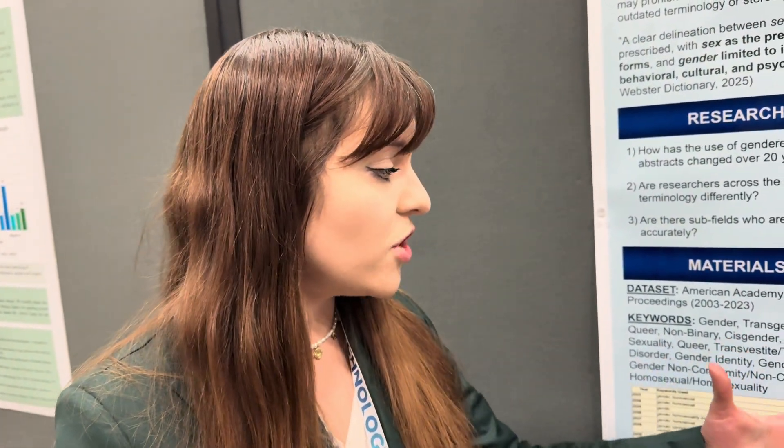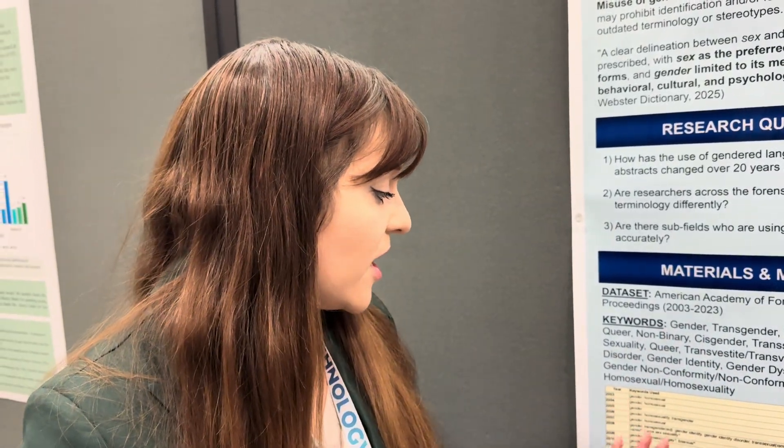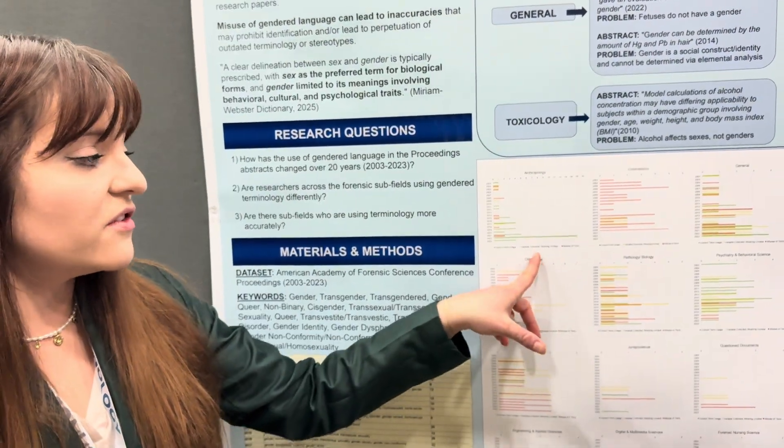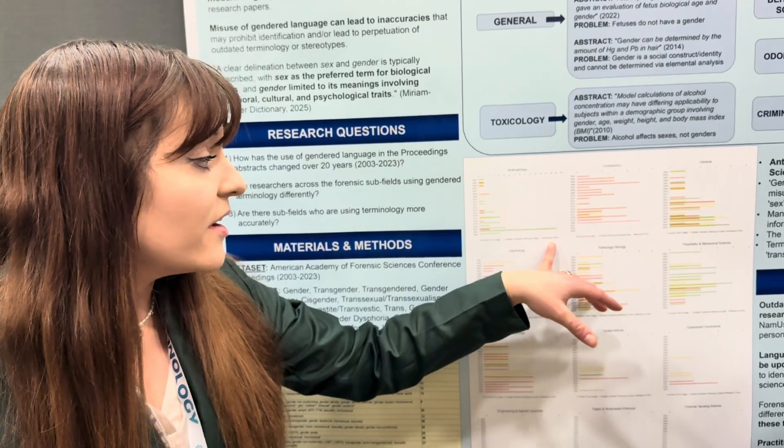We looked at the AFS proceedings — all the abstracts submitted and presented here between 2003 and 2023 — and then we searched keywords related to sex and gender. We tried to be really broad: gender, transgender, transvestite, gender identity, gender dysmorphia. We looked at which words were used, how many per year, and divided it by section. We then coded them by whether the terms were being used correctly, if it was just a variable recorded but without enough information to tell, or if it was misused.